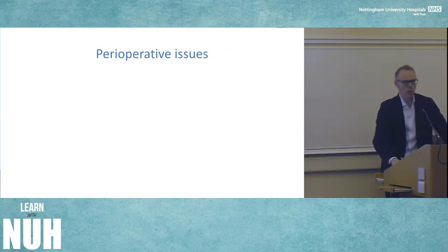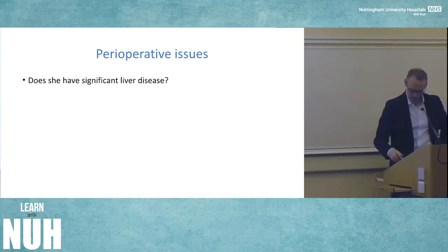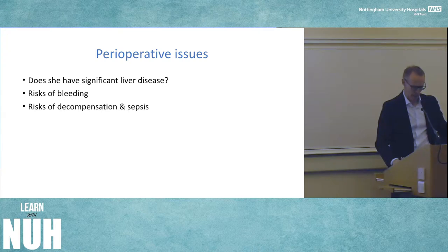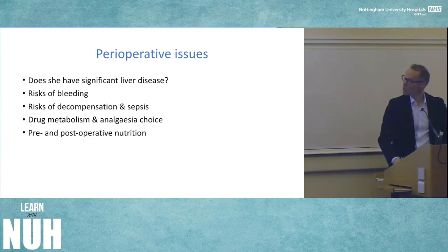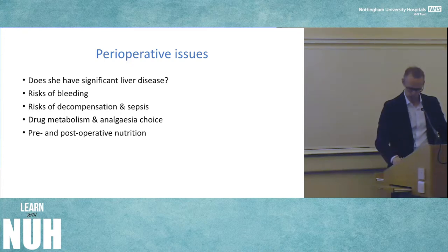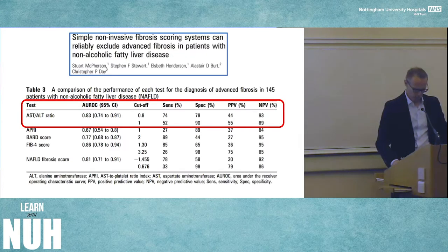What perioperative issues do we think about for patients with liver disease? Do they have significant disease? What's their risk of bleeding, risk of decompensation or sepsis after surgery? What about drug metabolism and analgesia choice? Pre- and post-operative nutrition — these are all relevant questions. You may also have an impact on wound healing.